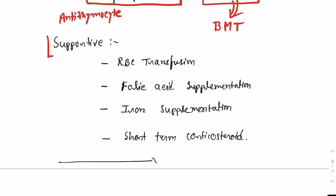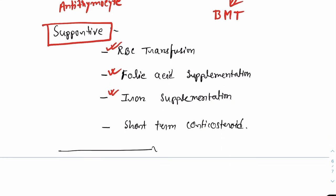If we talk about the supportive treatment, we can do red blood cell transfusion as and when needed. We can do folic acid supplementation. Iron supplementation should be done when the patient becomes iron deficient because of continuous or chronic hemolysis. And in certain cases, short-term corticosteroid, for example prednisolone, can be used in cases of acute hemolytic condition.